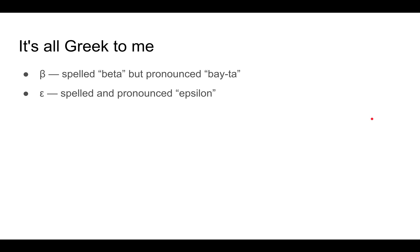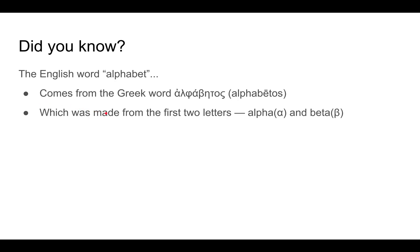I also need to mention the Greek letters beta and epsilon. By the way, the English word alphabet actually comes from the Greek word alphabetos, which comes from the first two Greek letters, alpha and beta. Anyway, just an interesting aside.